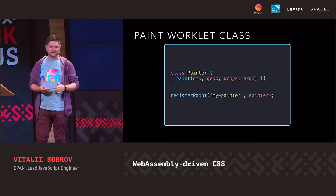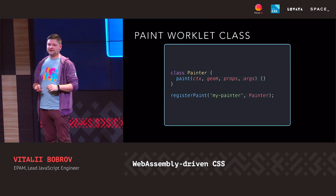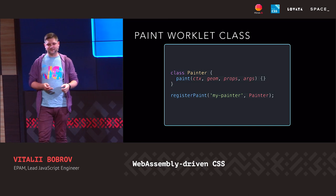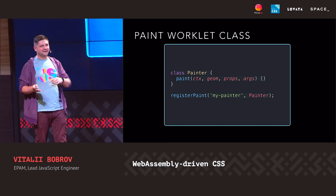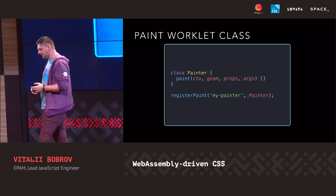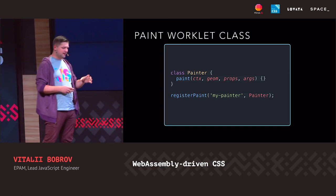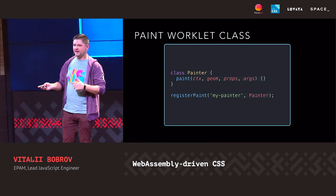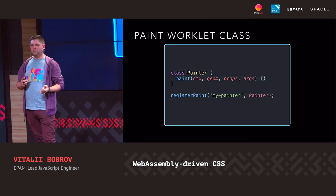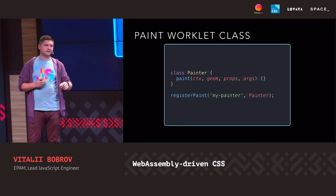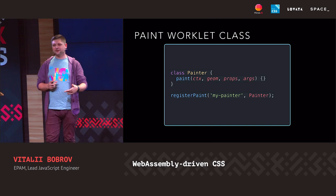Let's go deeper. In a separate file, we're creating a class — let's call it Painter — and it should have at least one method: paint. This method accepts context, geometry, properties, and arguments. Context is a basic 2D canvas context with some limitations; for example, you are not allowed to render text with it, at least for now. Geometry is the object that contains the width and height of the elements we apply our function to — it's the actual dimensions of the element. And the most interesting thing is that if the element size changes, Paint API will trigger the paint function, triggering a new render for us.